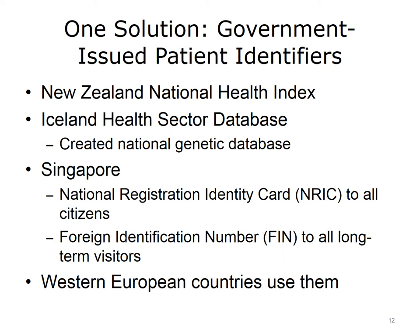While the issue of national health identifiers is somewhat controversial in the U.S., it's actually a non-issue in most other industrialized countries. In New Zealand, there's a National Health Index used for all health purposes, with a website describing why it exists and how the government protects privacy. Iceland also has a national identifier, and its health sector database is home to many genetic studies, including a national genetic database. In Singapore, all citizens have a national registration identity card, and long-term visitors get a foreign identification number. Most Western European countries also use national patient identifiers without much controversy.